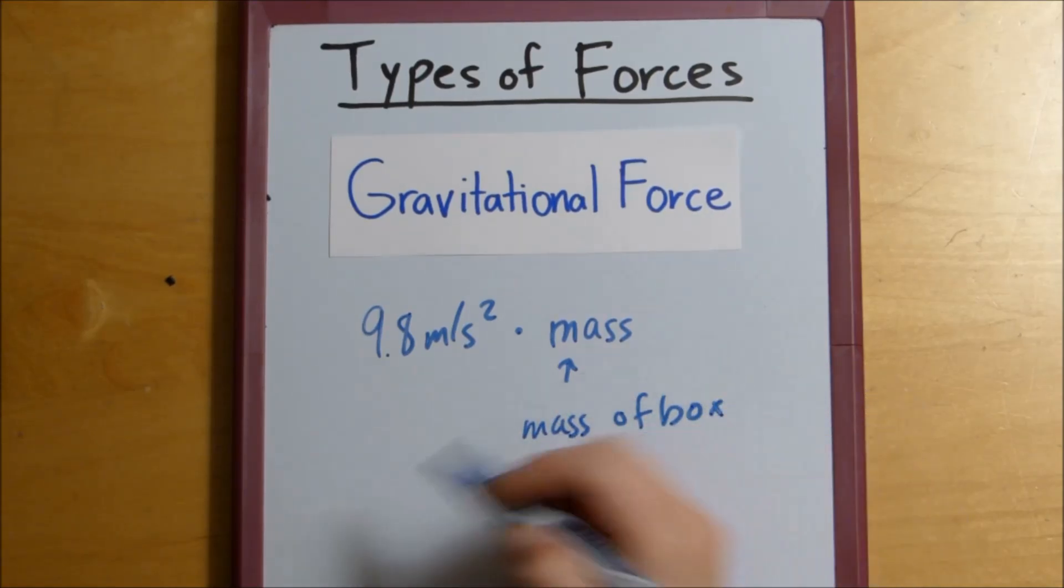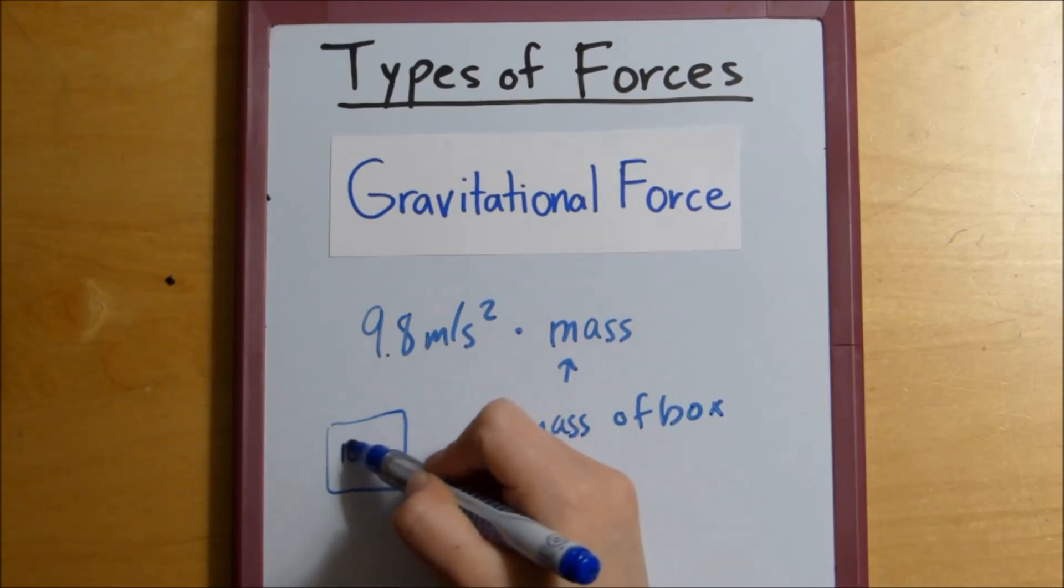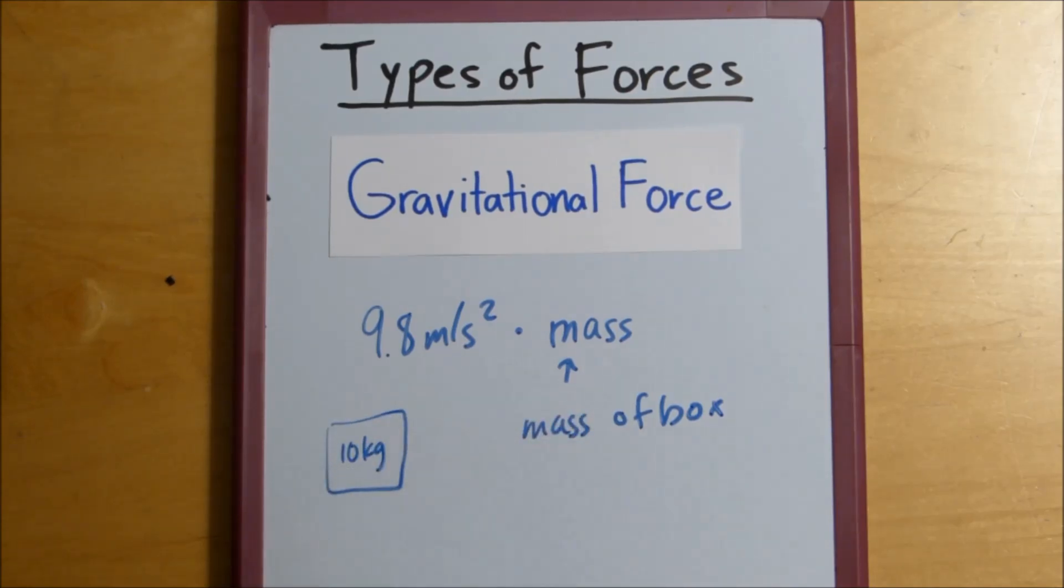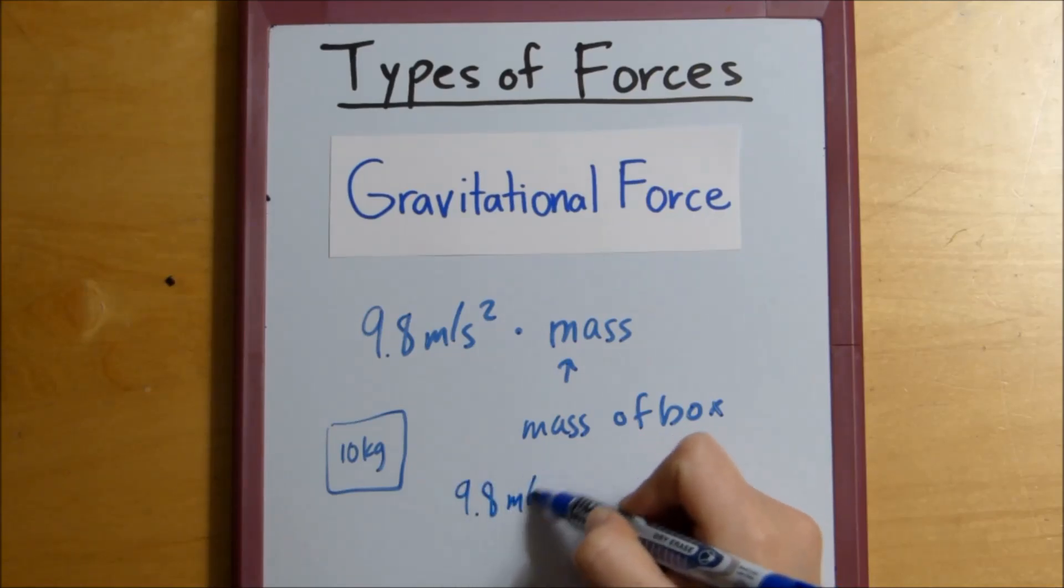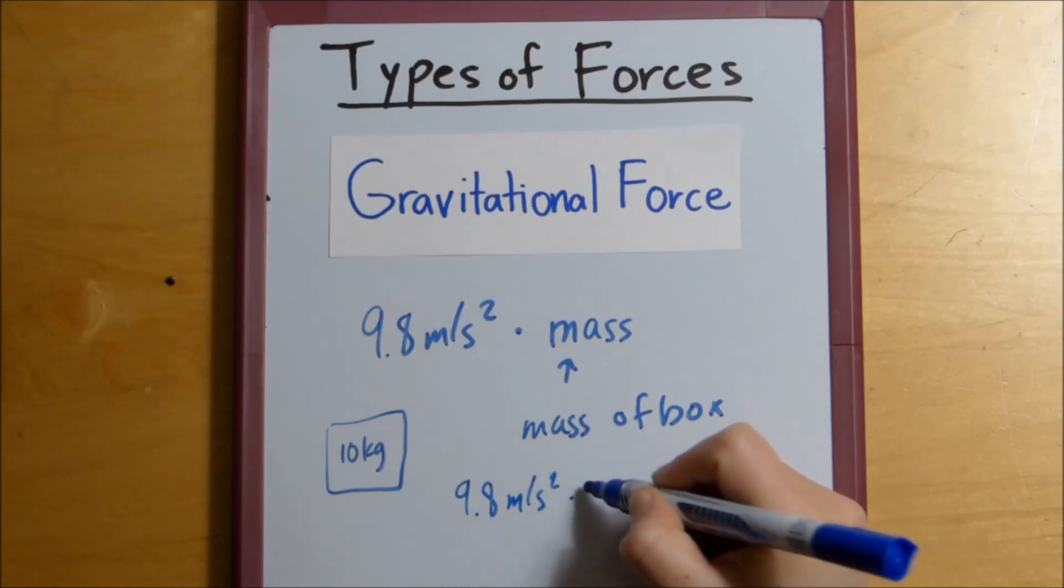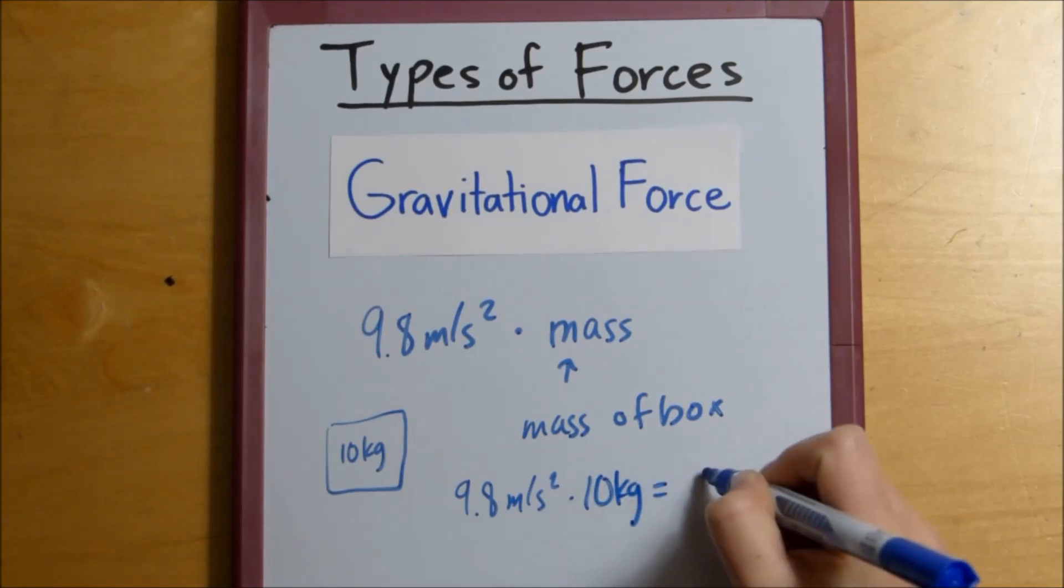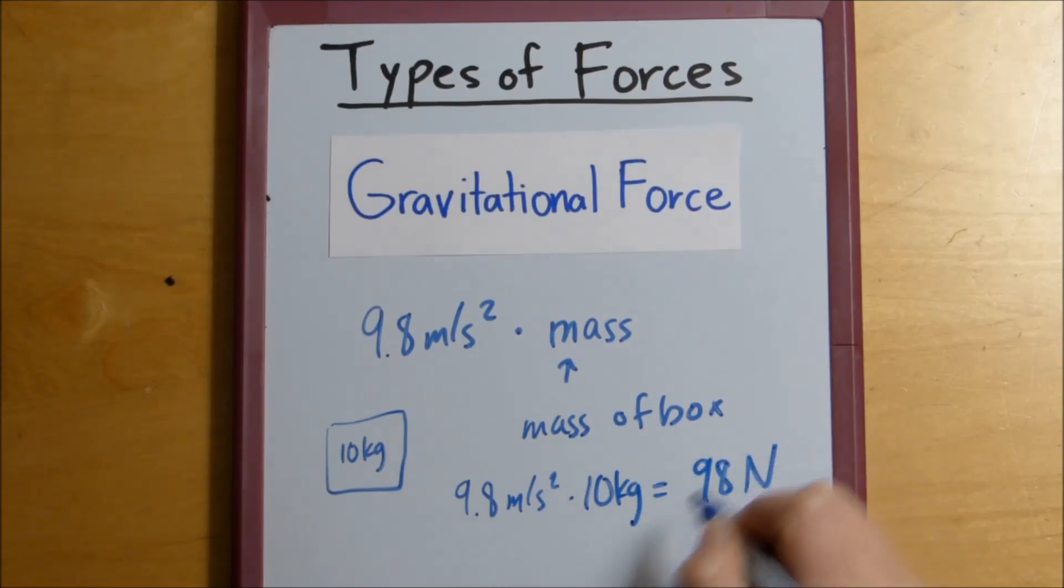So, let's say that our box is 10 kilograms. So to find the gravitational force, which is also sometimes called the weight force, because the weight of the box depends on it, we would say 9.8 meters per second squared times 10 kilograms, which is 98 newtons, right?